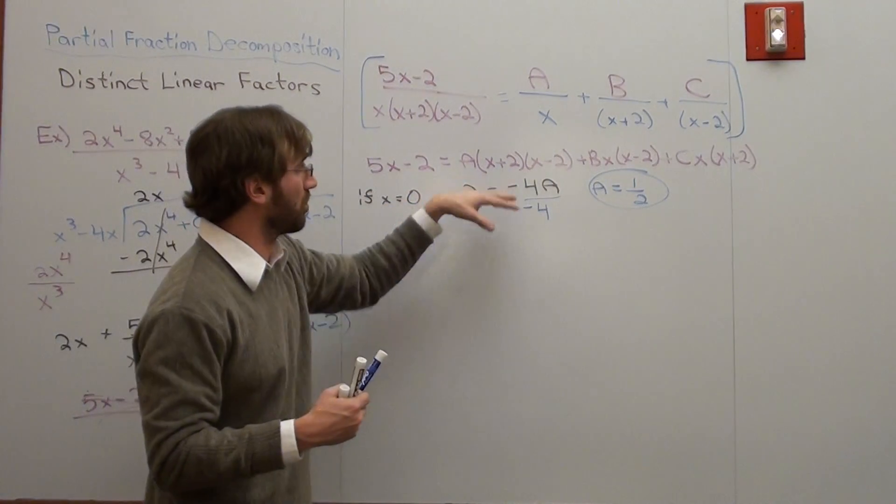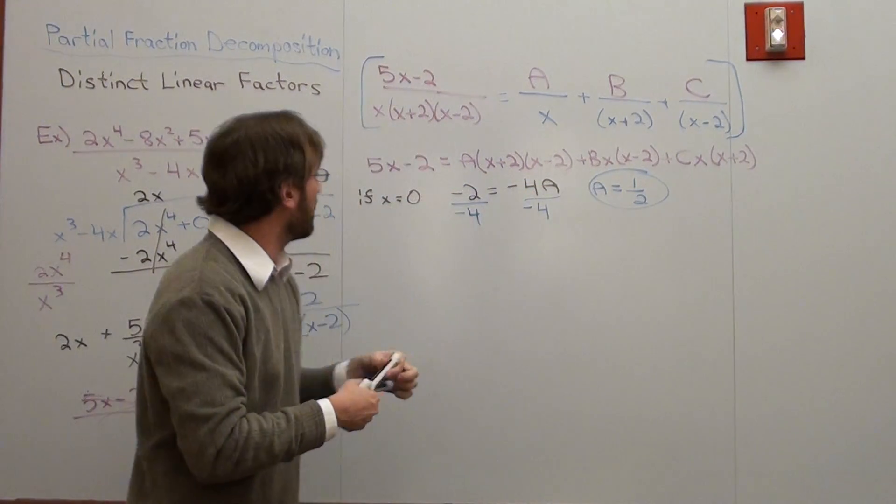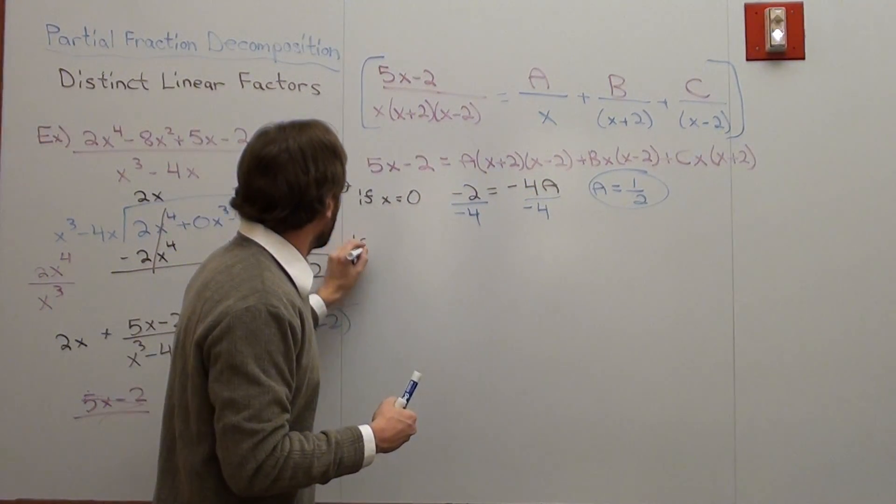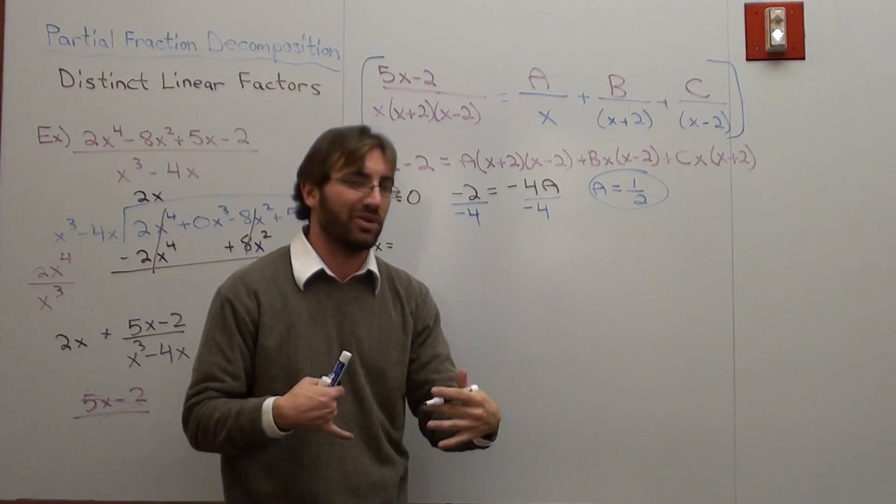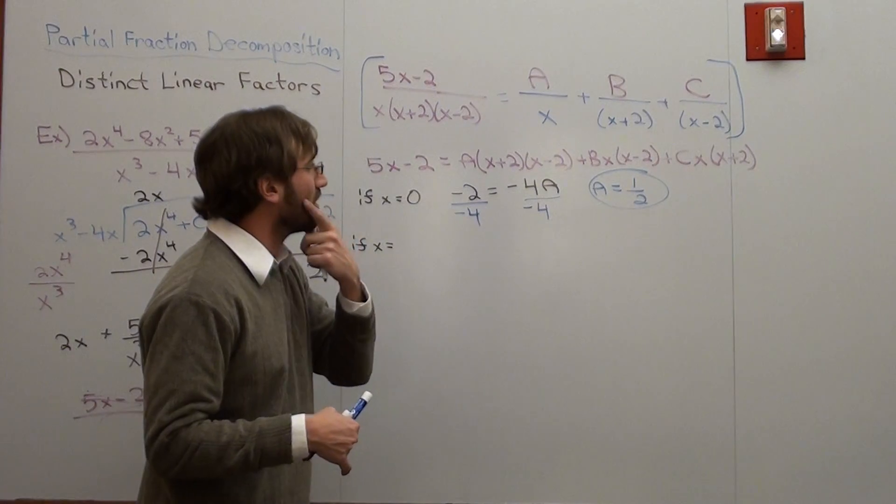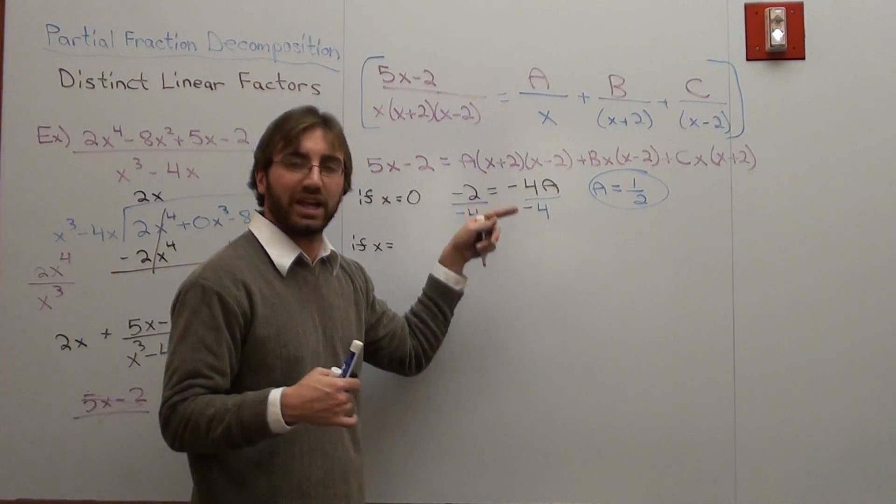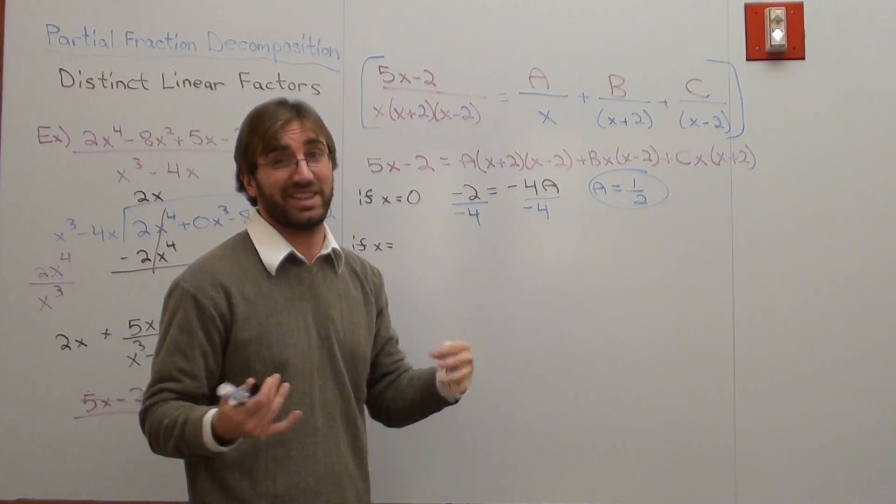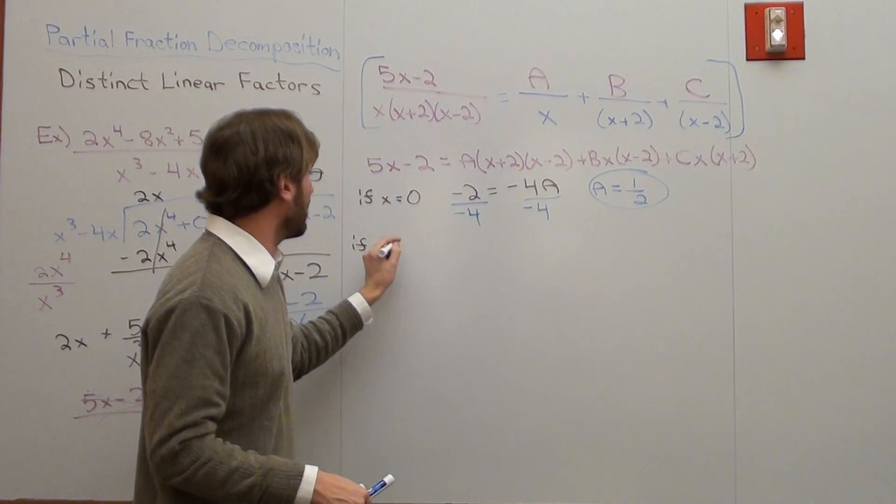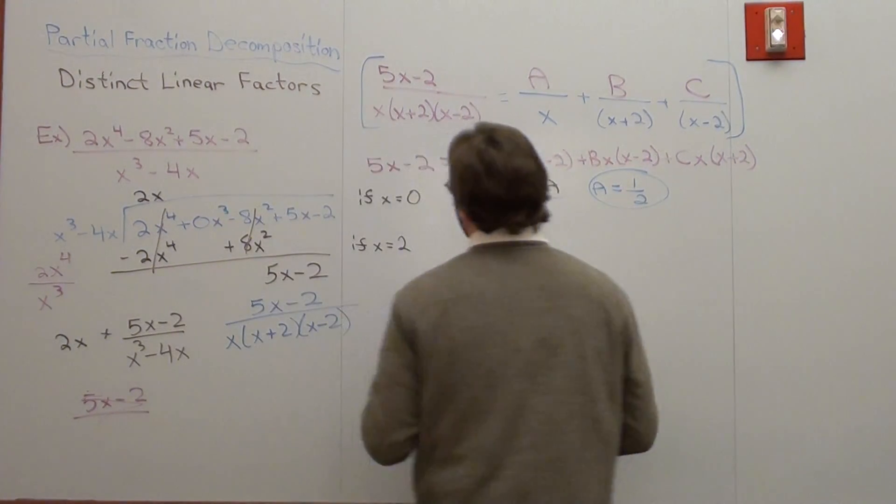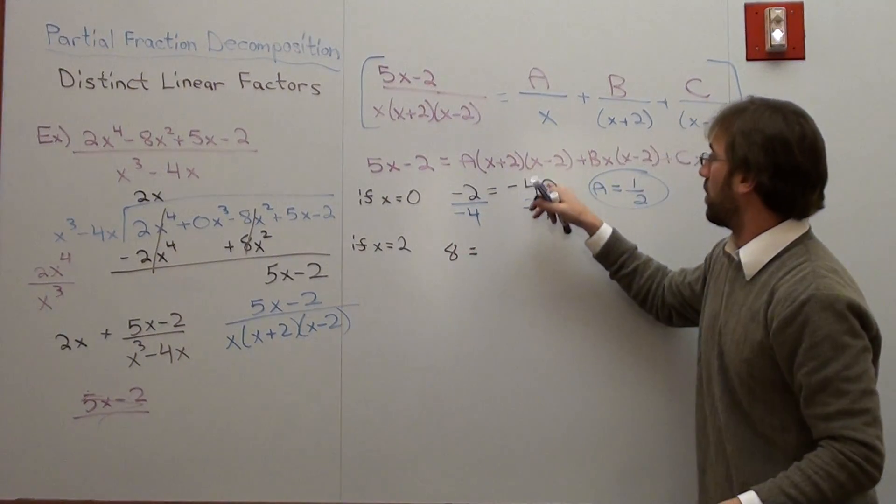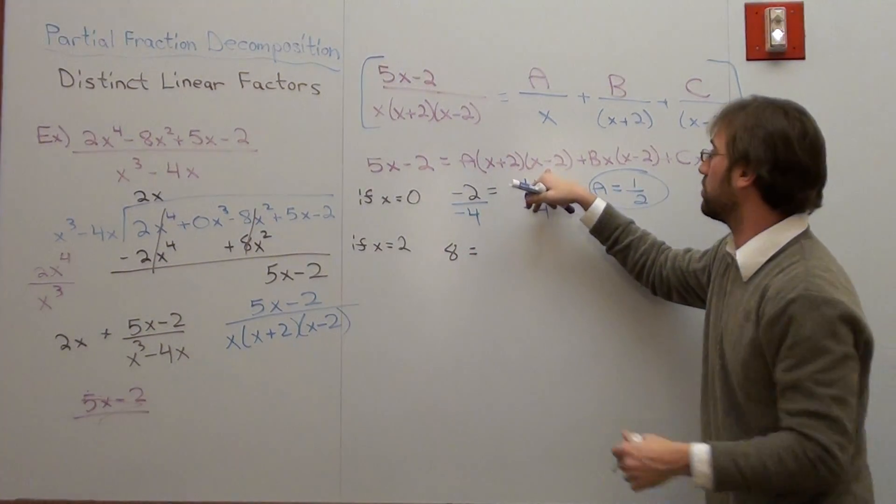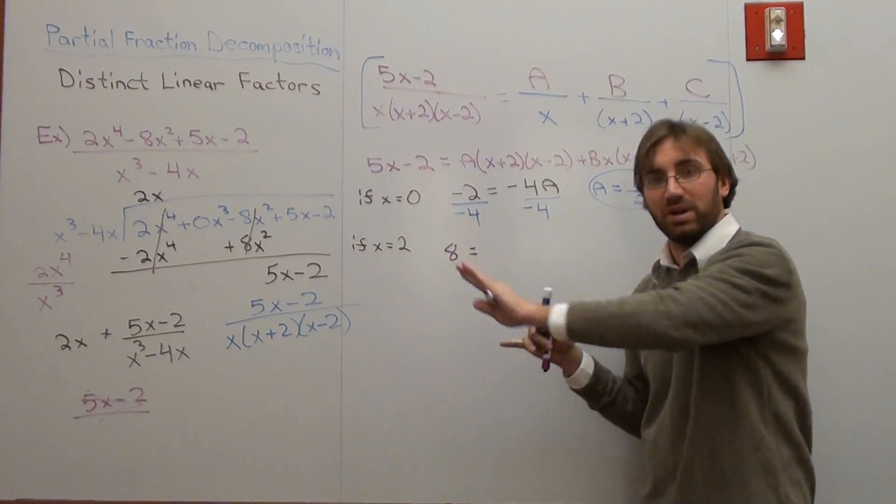Now I'm going to do the same method in order to try to figure out my B or my C. If x equals, well, I'm not going to use 0 now. I'm going to use something a little bit further. I have a choice of 2 or negative 2, and in this case, I'm going to pick 2, because I think 2 is just easier to substitute for. If x equals 2, what am I going to get? Well, I'm going to get 10 minus 2, which is 8.